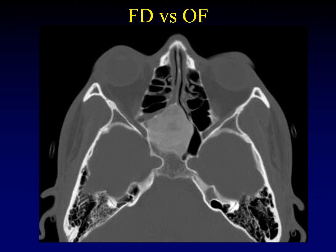Here's another example to drive home this concept of whether we're dealing with fibrous dysplasia or ossifying fibroma. Here is a ground glass lesion sitting along the anterior aspect of the clivus or coming from a wall of the sphenoid sinus. What's the configuration? Is this the configuration of an underlying bone, or is this a spherical configuration? This is almost a perfect sphere — this is an ossifying fibroma, not fibrous dysplasia, no matter what the pathologist says.